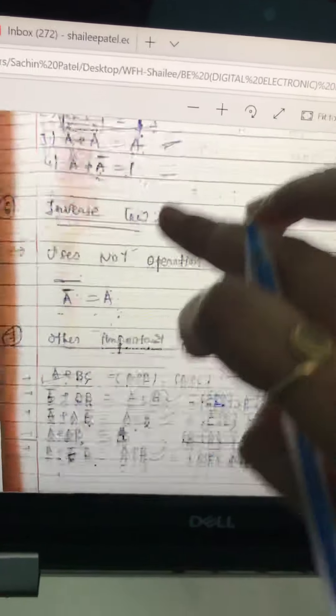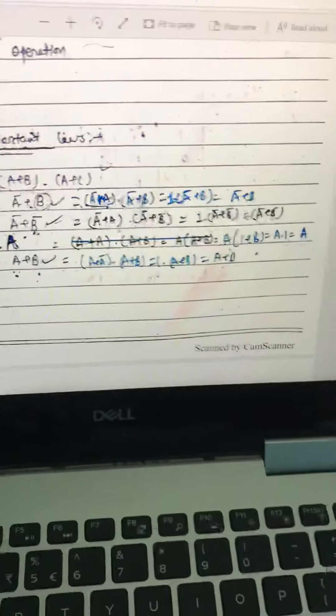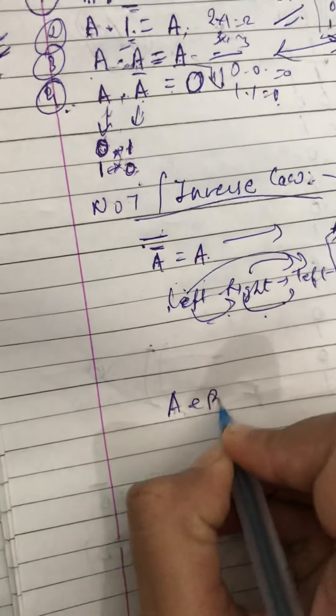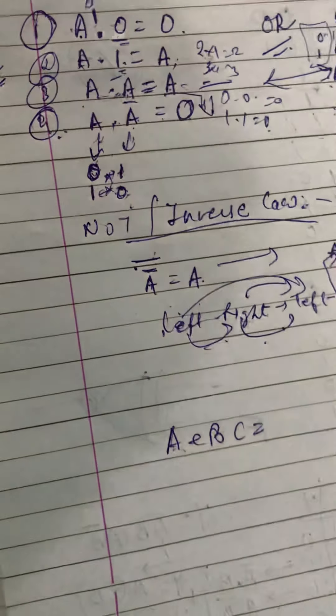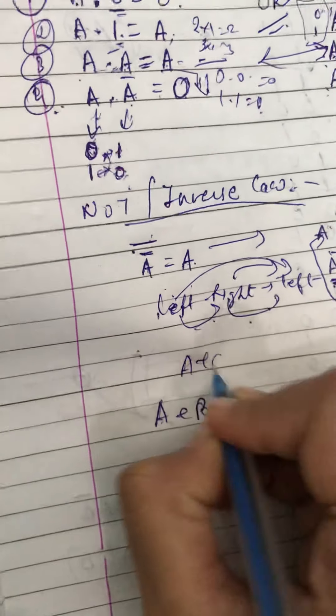Now some other important laws are there. The first one is A plus BC, by using distributive law, which you understand...